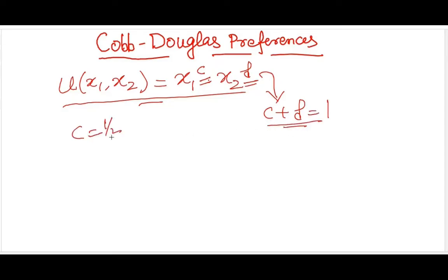If you take c equal to half and d is equal to also half, your utility will be formed as x1 to the power half and x2 to the power half, which means that it's just root of x1, x2.